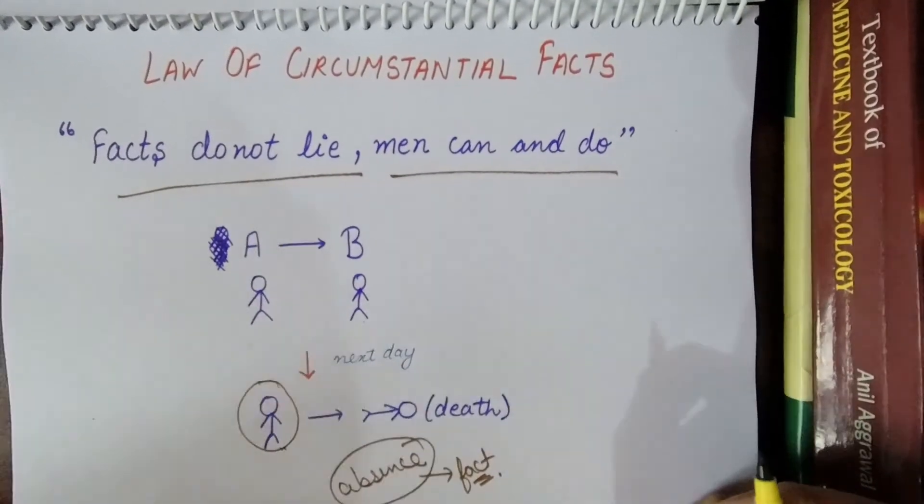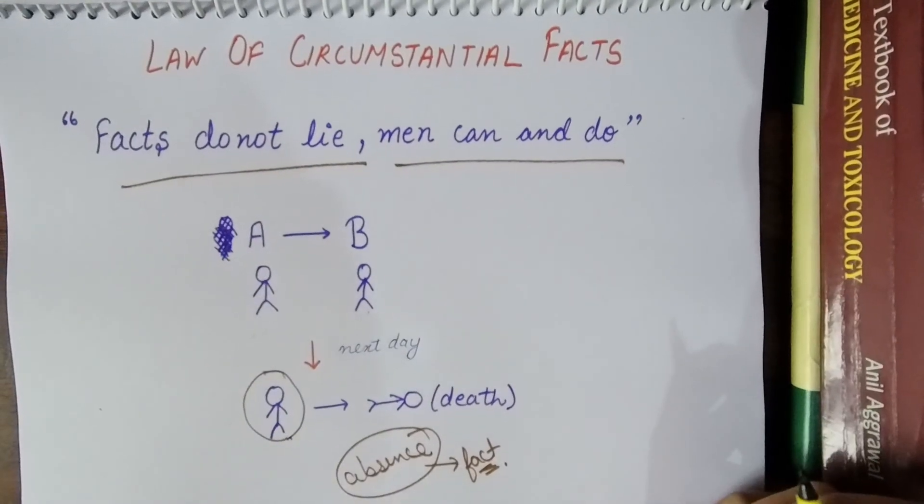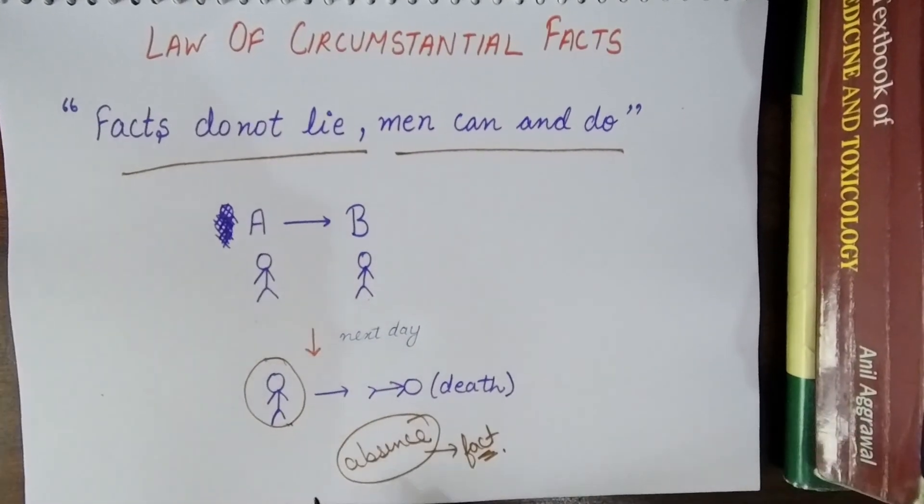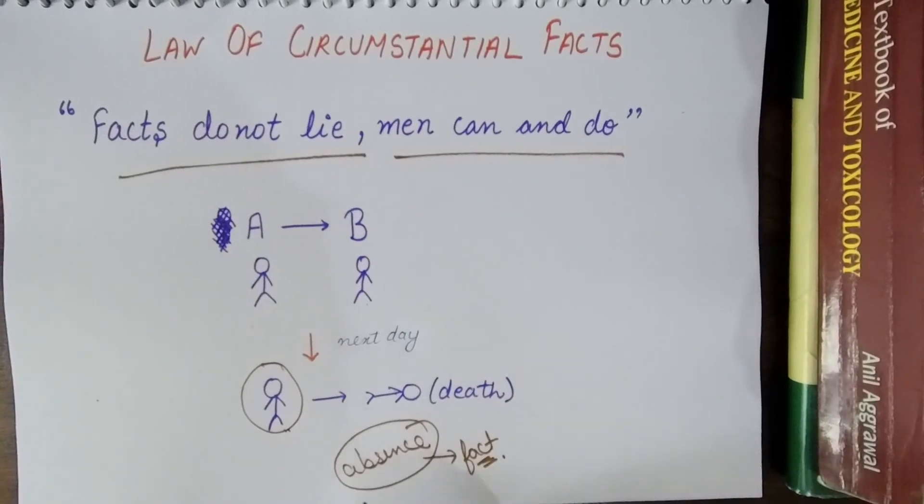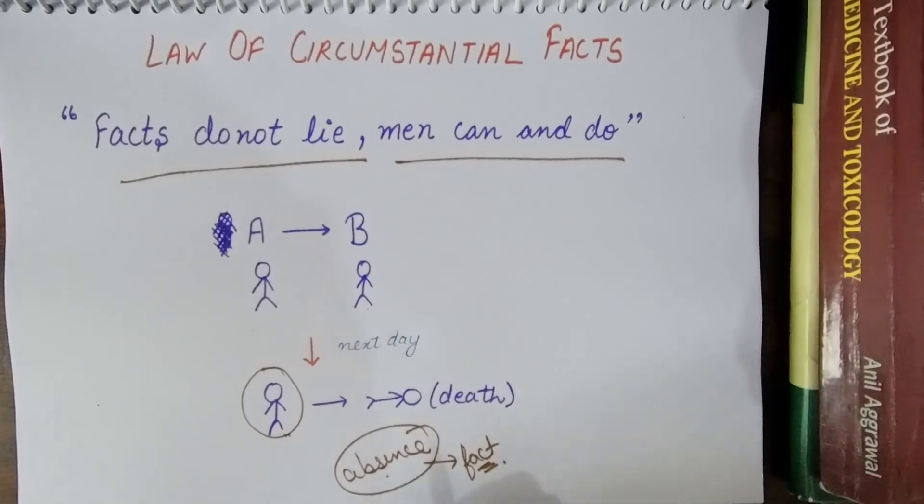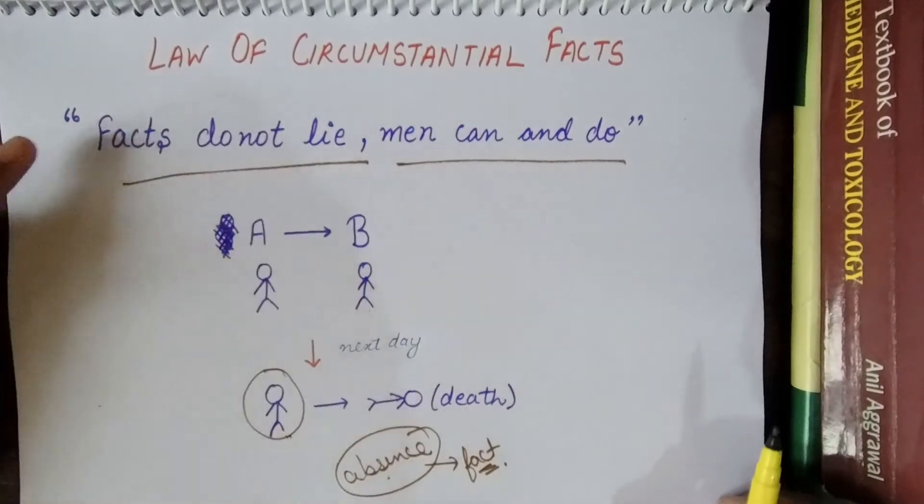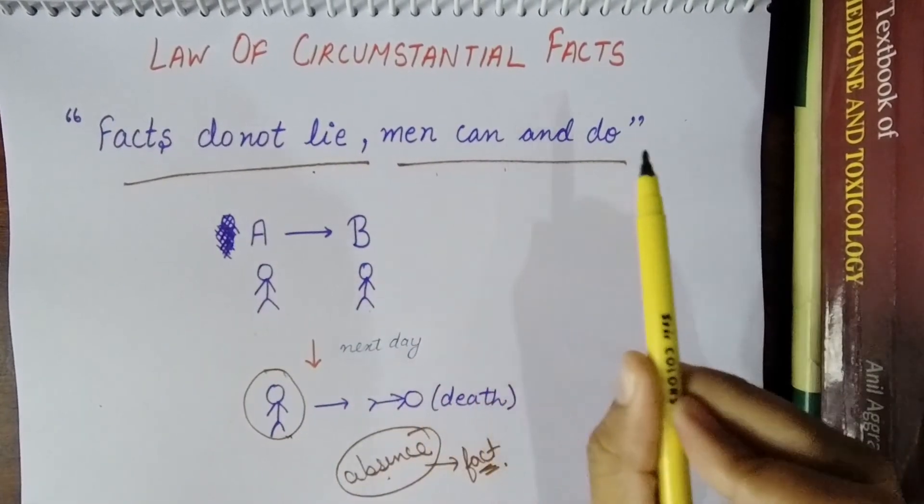And this absence is a fact. His absence is a fact. The person can lie that he went on pilgrimage or that he didn't commit the crime. But his absence at that place is a fact. So this law says that facts do not lie, men can and do.